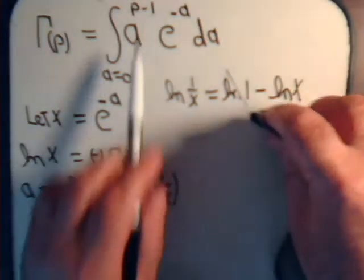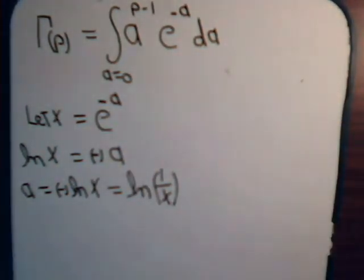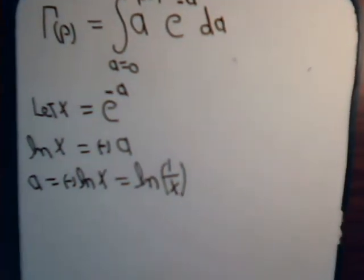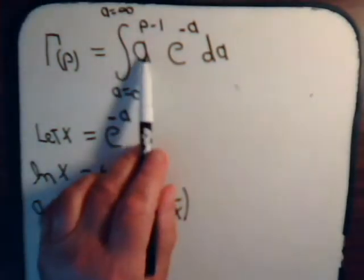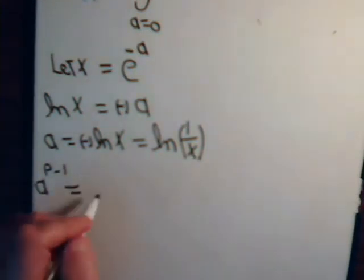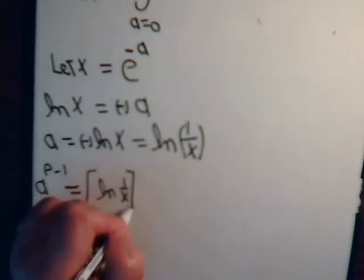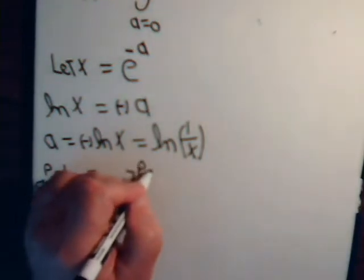Now, if we have a is raised to the p minus 1 power, or that would be the same as this, a to the p minus 1. And then, that would then be this raised to that power. Natural log of 1 over x raised to the p minus 1 power.